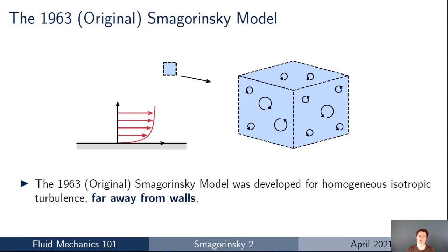Starting with the original model, it's worth bearing in mind that the 1963 Smagorinsky model was developed for homogeneous isotropic turbulence far away from walls. The idea was to develop a large eddy simulation model that can simulate a box of isotropic turbulence far away from the wall, so the model was never developed with walls in mind. This presents a problem for modern CFD codes because the majority of analyses — aerofoils, internal flow through pipes — always involve walls.